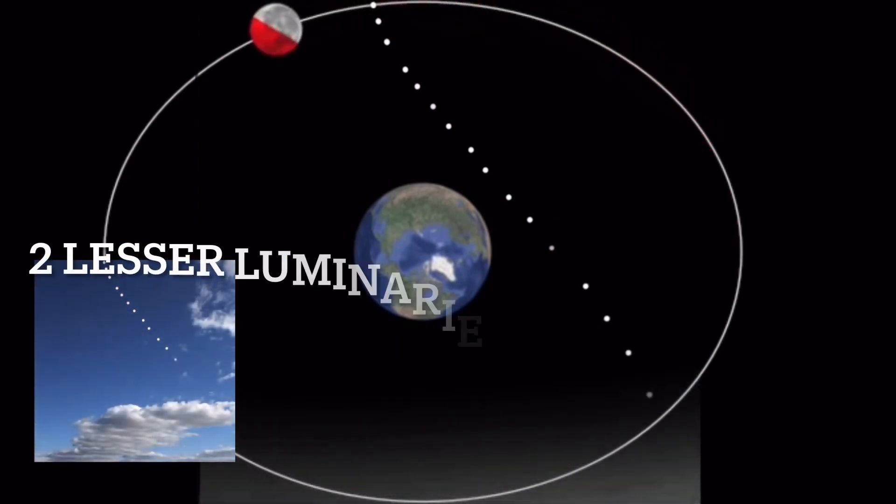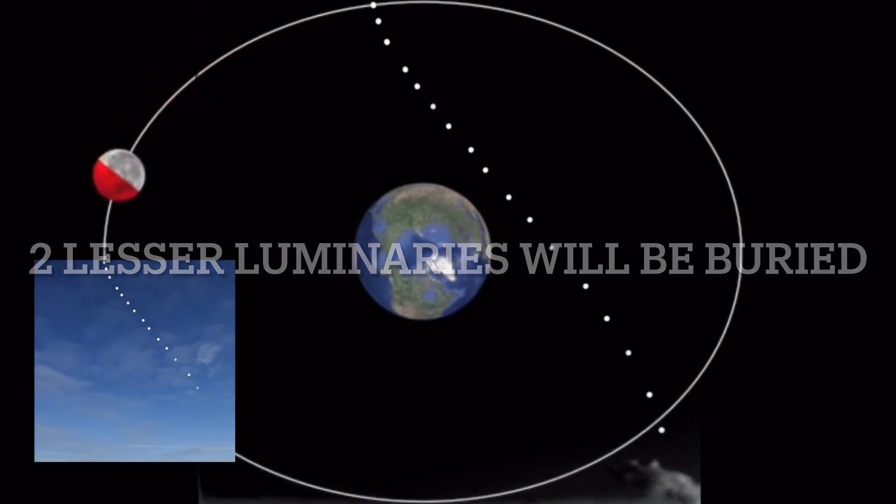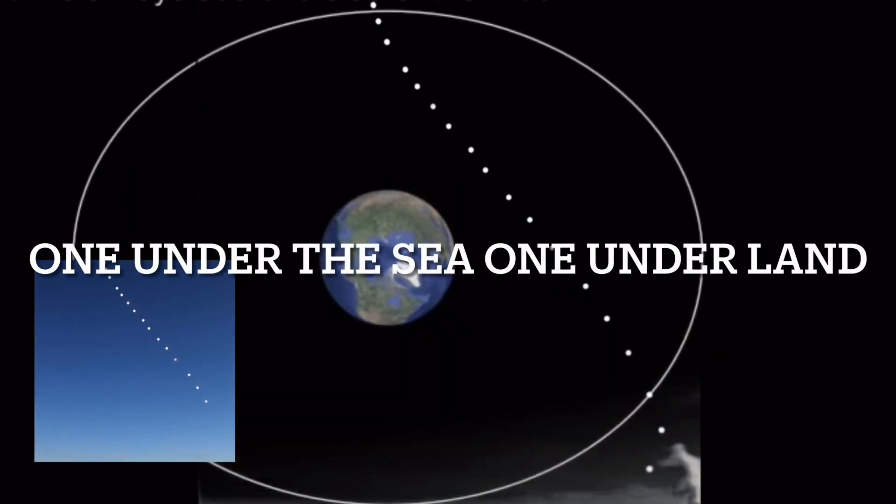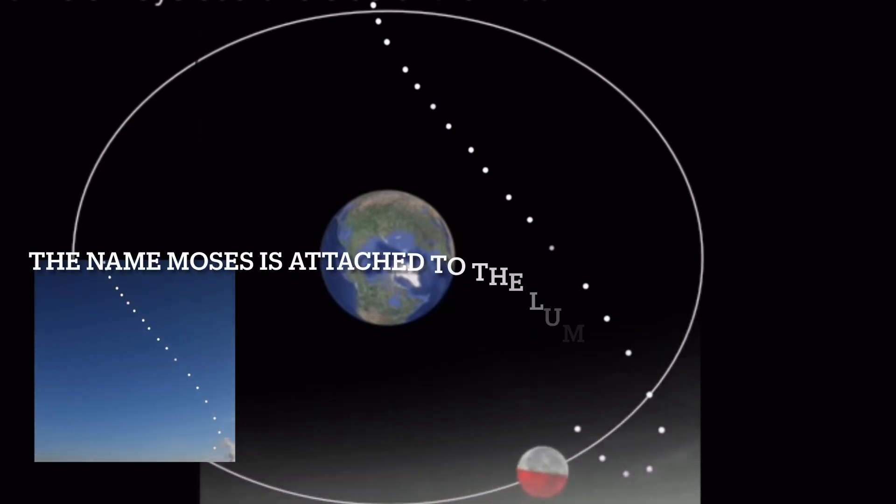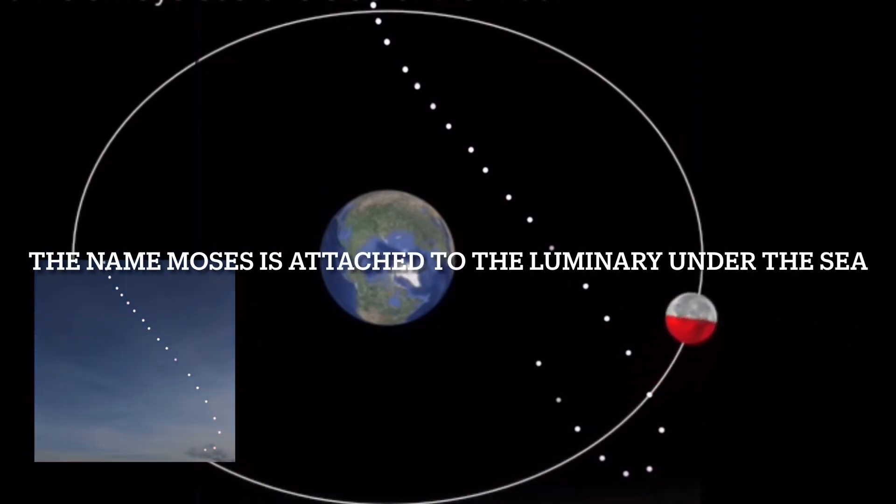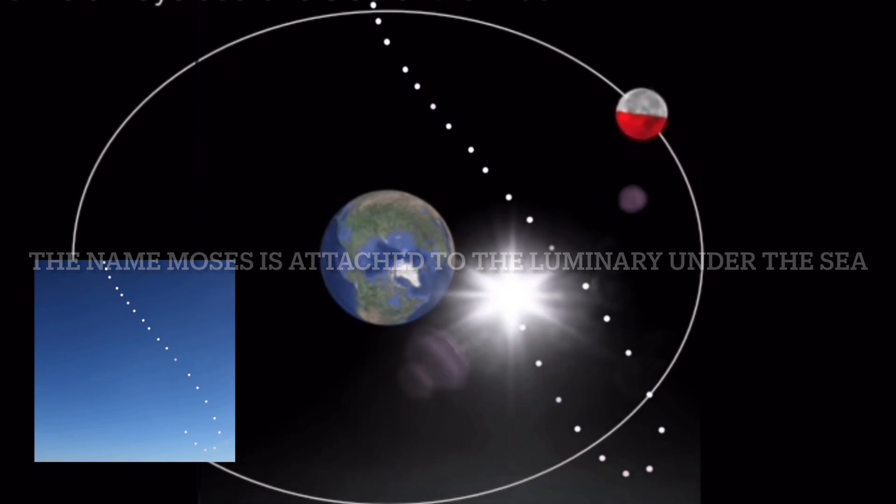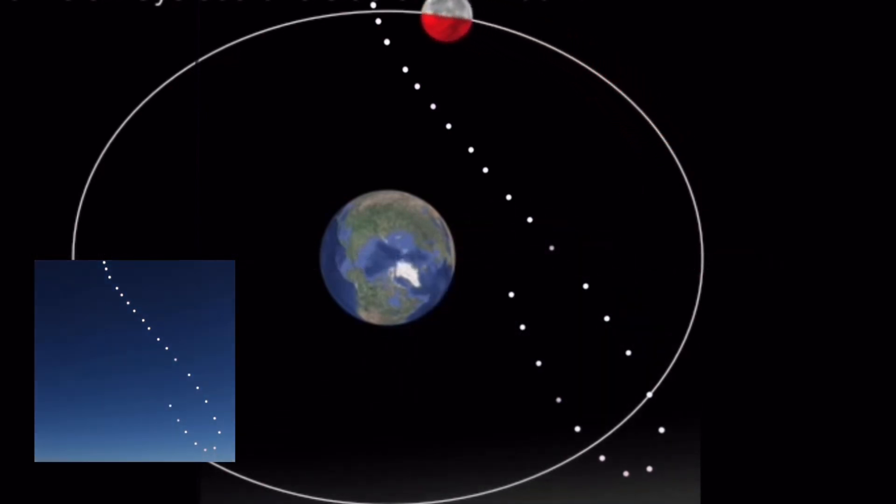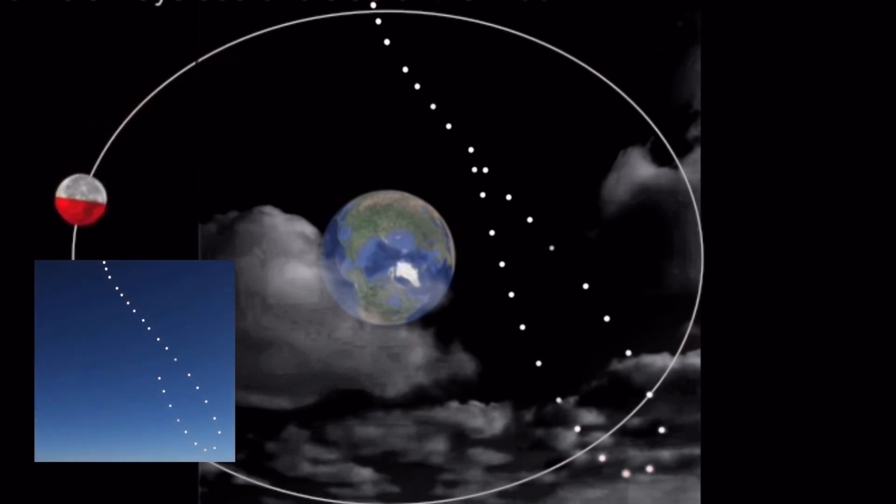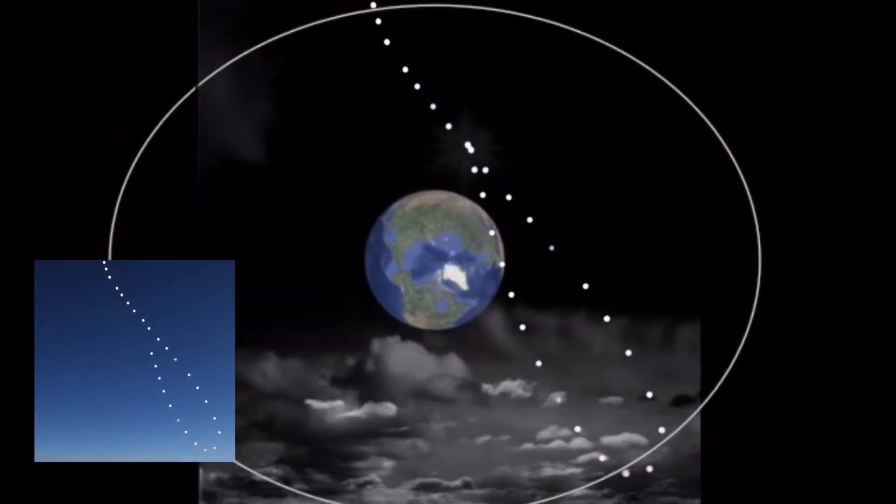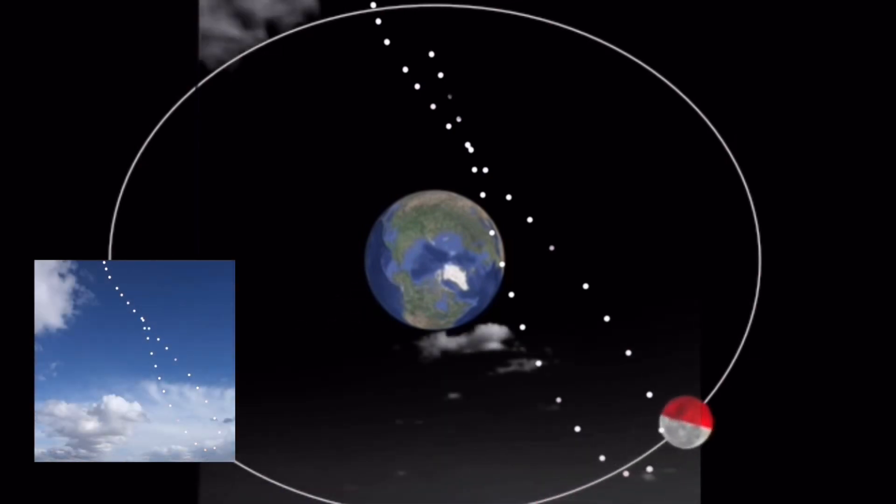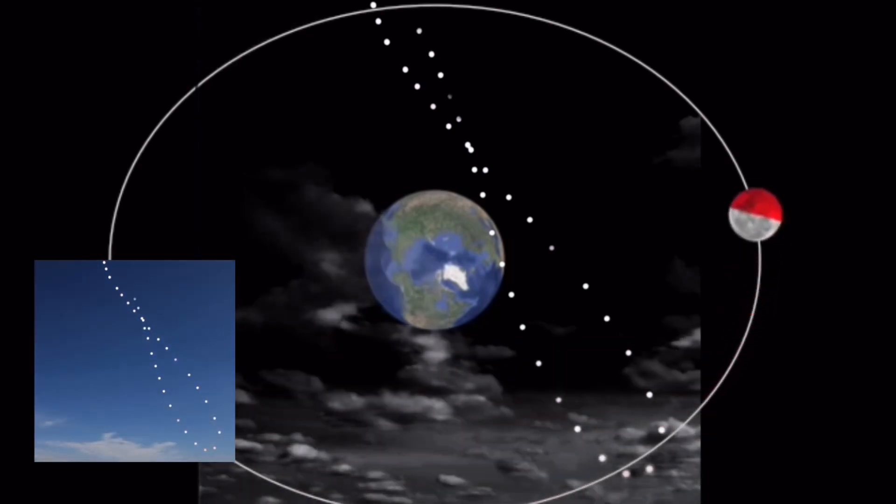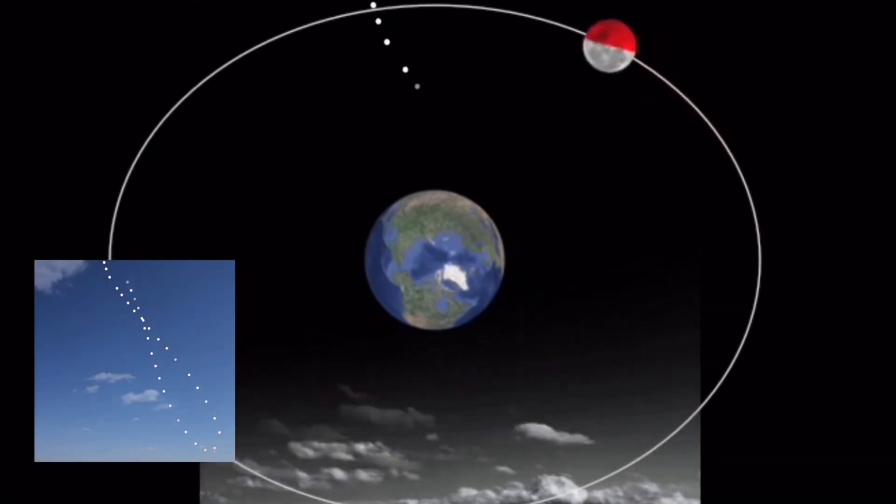But also I suppose the reverse is true as well. There is a sun that is buried underneath the earth. But the four luminaries are as follows: the sun and the moon follow the same trajectory.